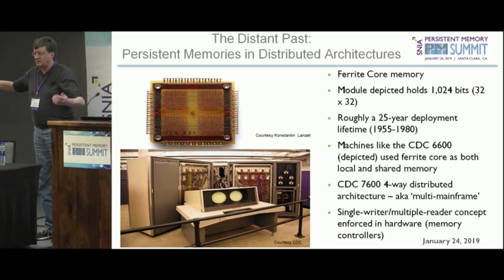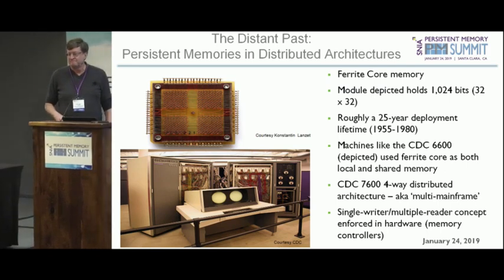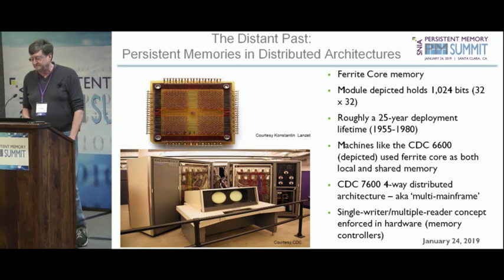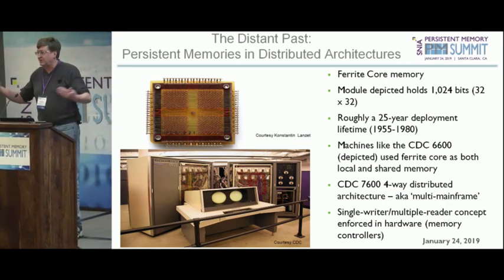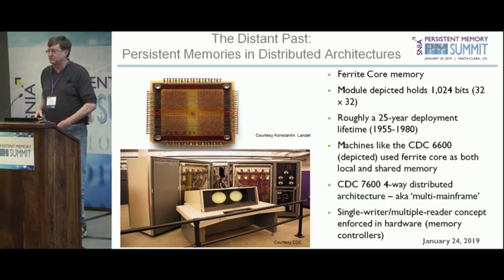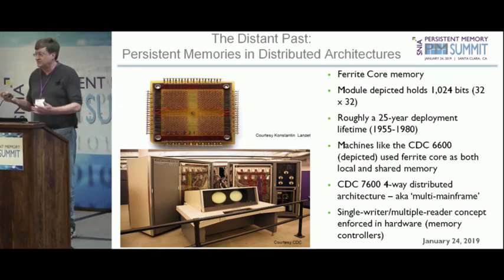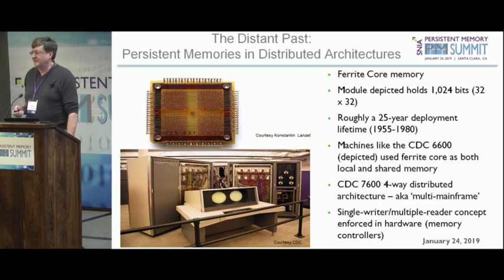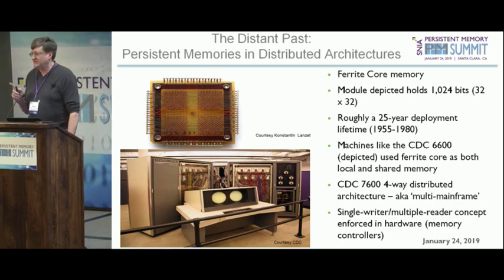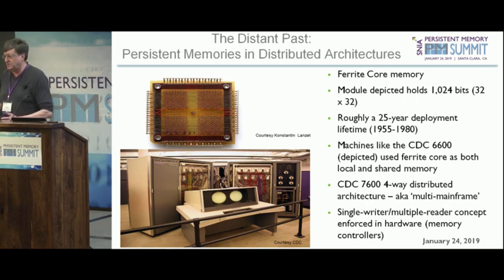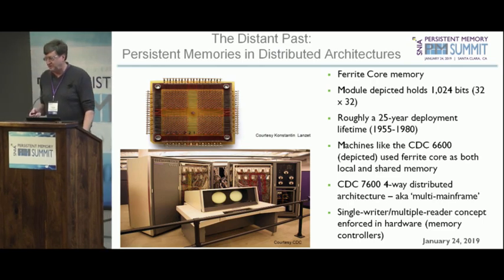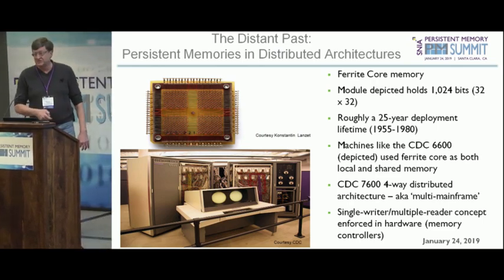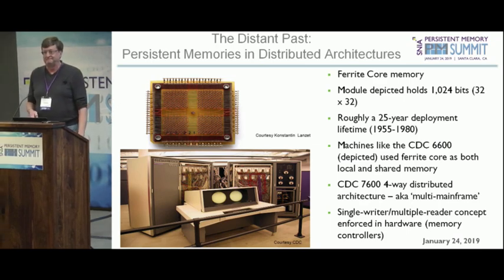A lot of large disaggregated, called large core memory — LCM — as opposed to SCM, system central memory. They enforced in hardware the single writer, multiple reader concept, because you could hook four 7600s together into this large core memory with independent channels. They had that all figured out in 1968. So persistent memory actually existed in the distant past — we used it, we programmed to it.